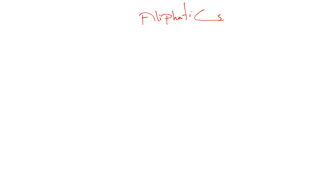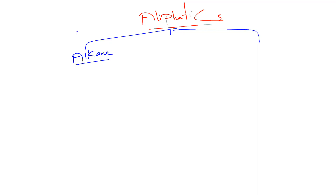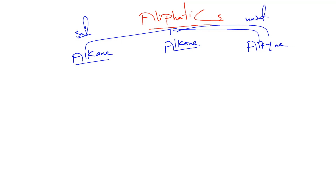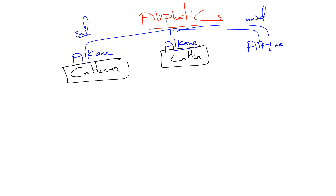Aliphatic means fats. We can classify aliphatics into alkane, which is saturated, and alkene and alkyne, which are unsaturated. The general formula for alkane is CₙH₂ₙ₊₂, the general formula for alkene is CₙH₂ₙ, and the general formula for alkyne is CₙH₂ₙ₋₂.